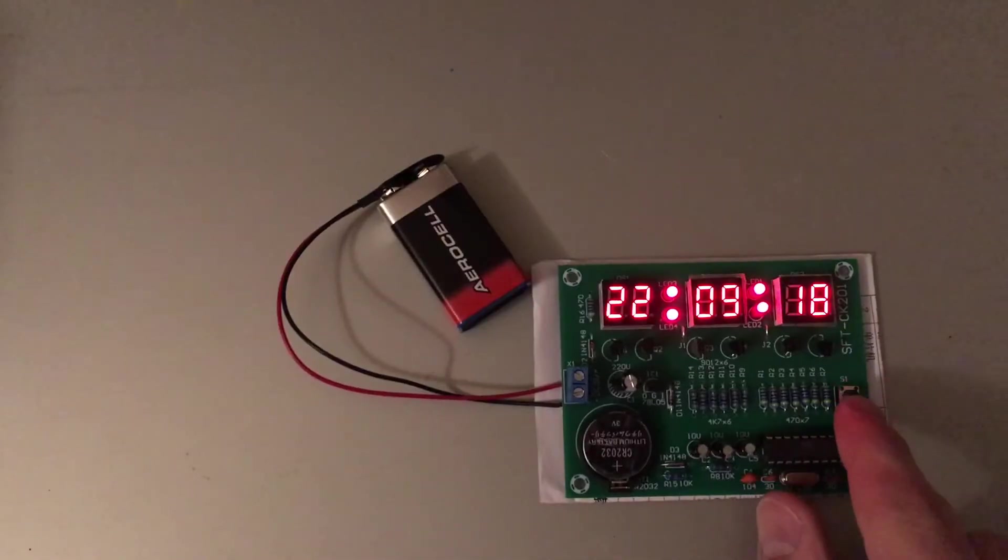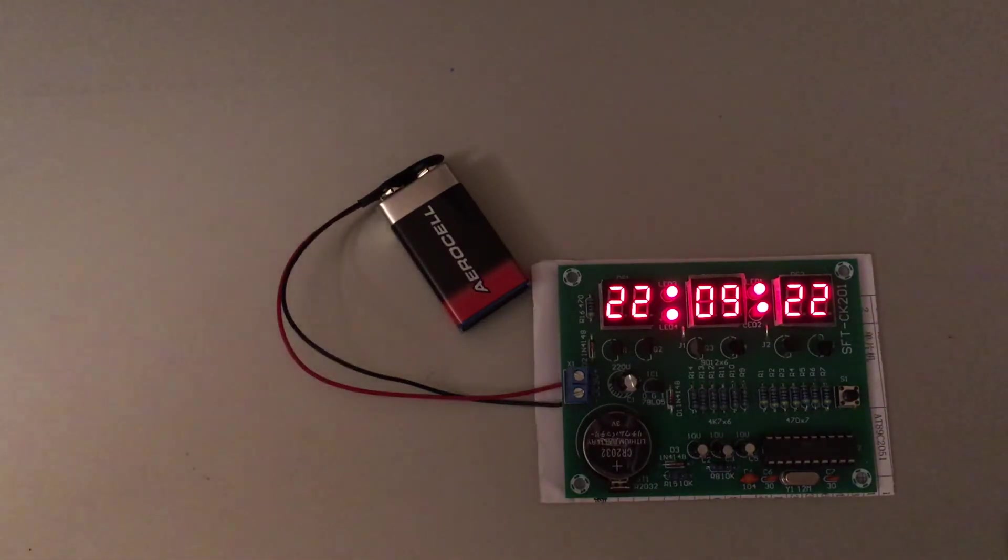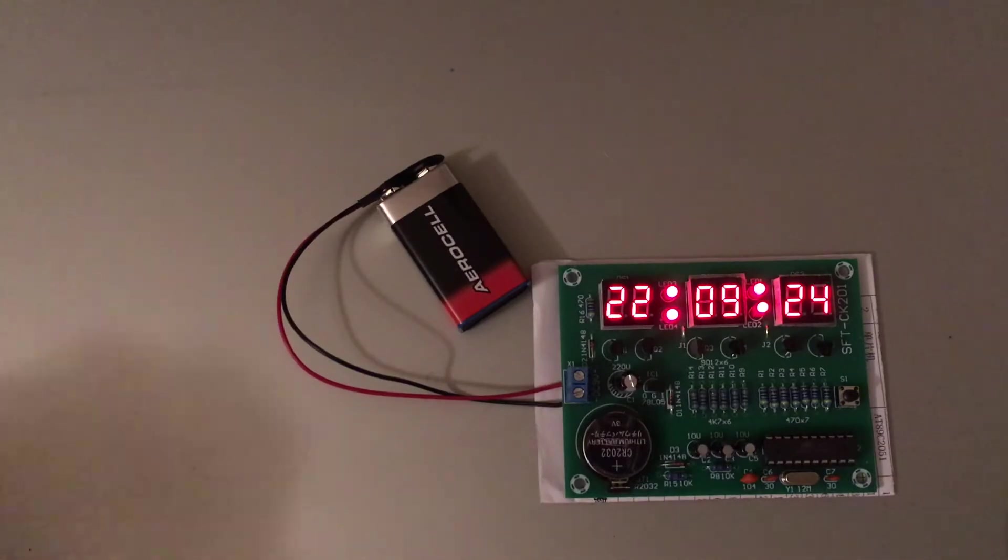Now, finally dim the lights. The name on eBay was AT89C2051. That's the IC.